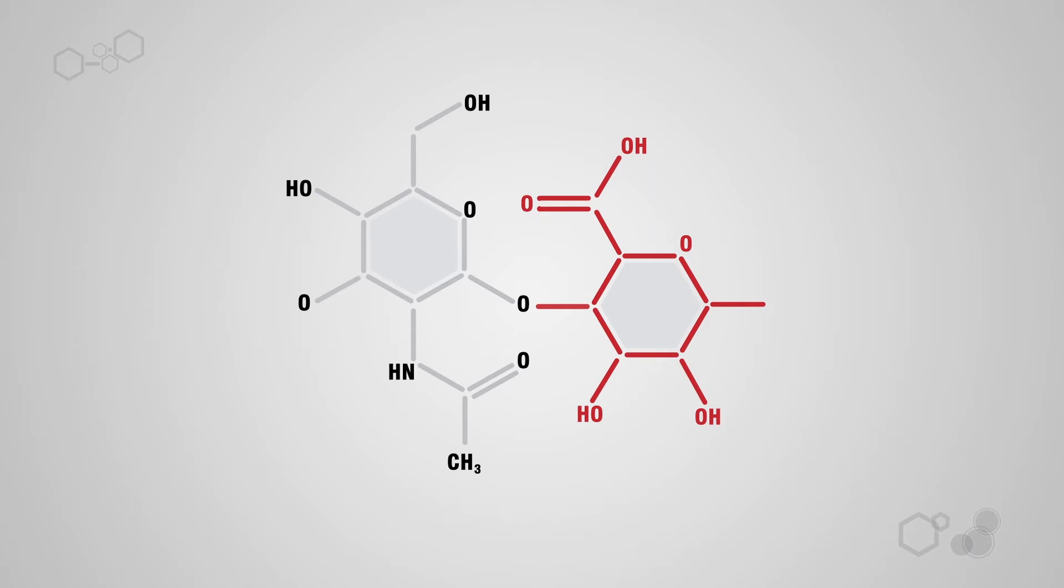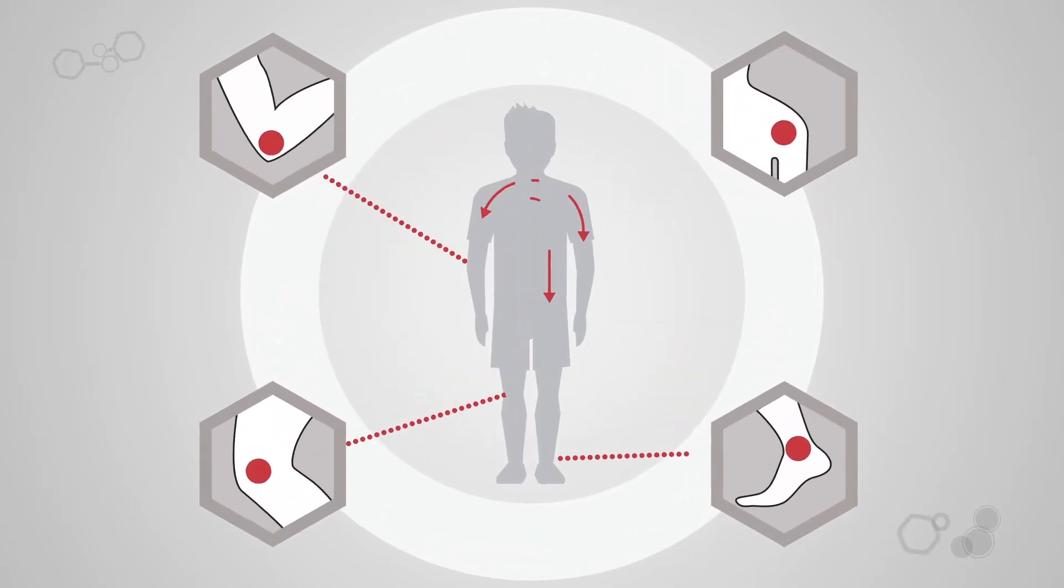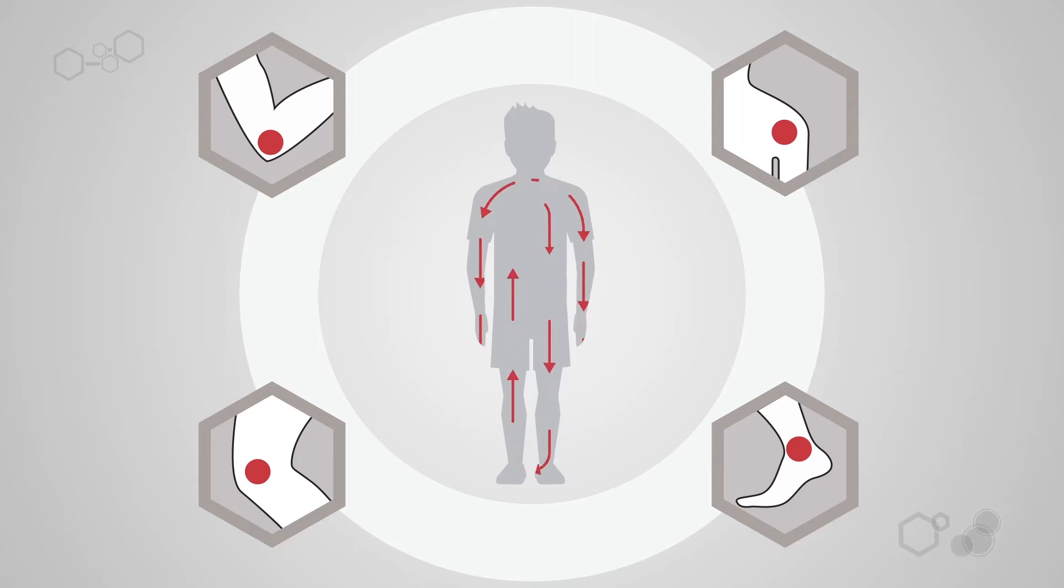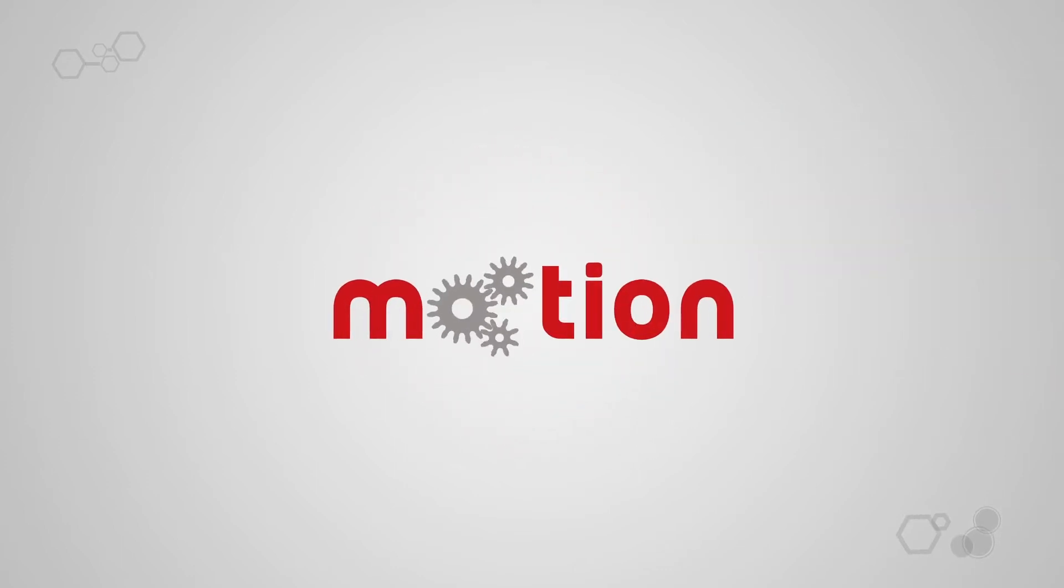Hyaluronic acid is a substance produced by our body that helps joints function well. It acts as a lubricant, reducing friction and easing movement.